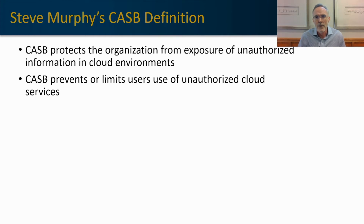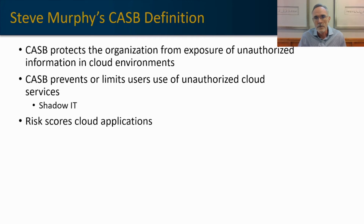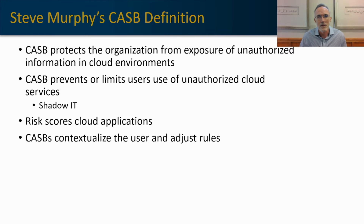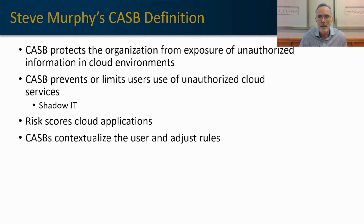A CASB prevents or limits users from accessing unauthorized cloud services, meaning you can control shadow IT by preventing users from accessing unapproved or unsanctioned cloud applications. CASBs also provide a risk score for thousands of different cloud environments, allowing you to customize your approach for every significant cloud environment your users access. CASB also contextualizes the end user and adjusts the rules or governance for those users on the fly — so if someone is using their laptop from an unsecured Wi-Fi, the CASB will recognize that and potentially reduce the allowances that user has to access data.